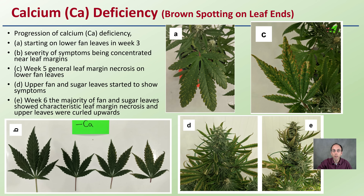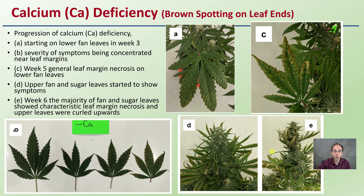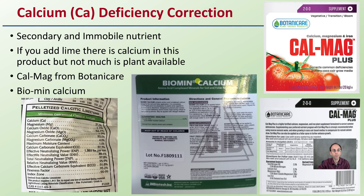Moving to calcium deficiency: we see the progression starting in the lower fan leaves in week three, with more advanced symptoms developing over time. At week five, there is generally leaf margin necrosis on lower fan leaves, with upper fan and sugar leaves also starting to show symptoms. By week six, the majority of fan and sugar leaves show characteristic leaf margin necrosis, and upper leaves are curled upwards. Look at all the signs and see what your leaves actually match up with.